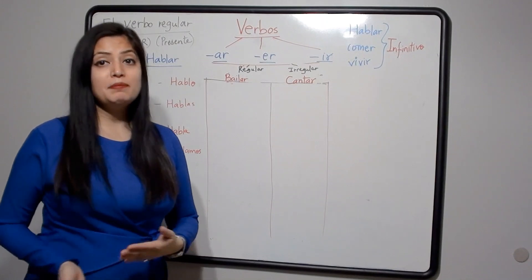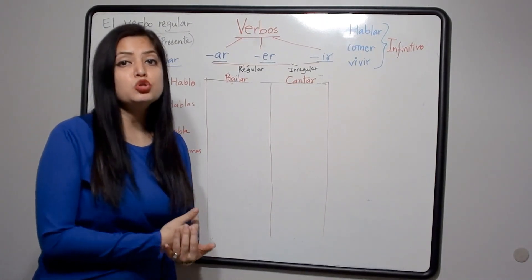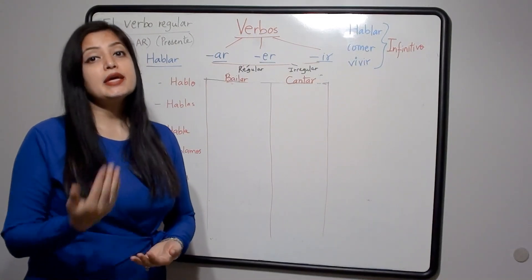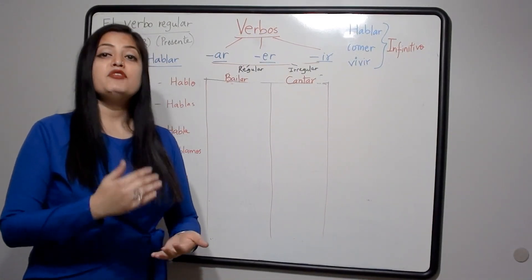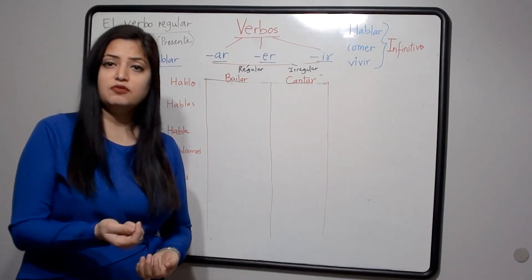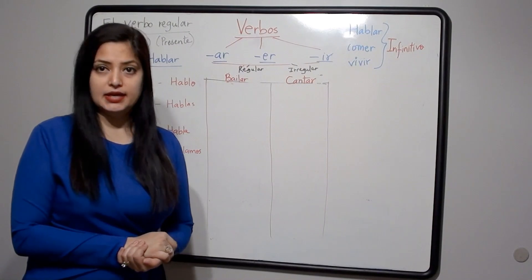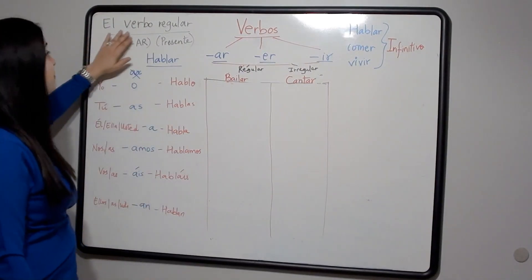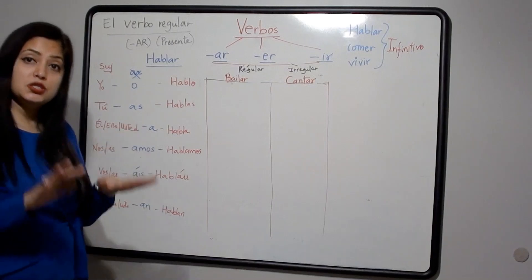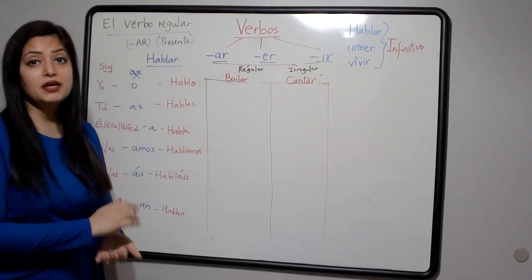Now what do we mean by that? A regular verb follows the rules of conjugation that we will cover, and an irregular verb does not follow those rules. Even if it doesn't follow the rules for just one subject, we consider it irregular. Today we are going to do regular AR-ending verbs in the present tense.